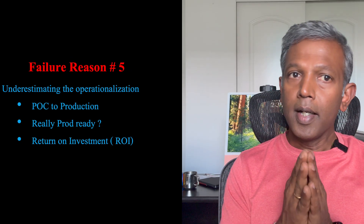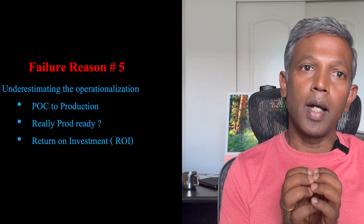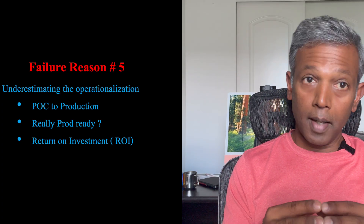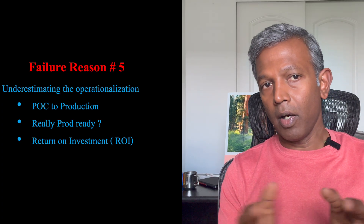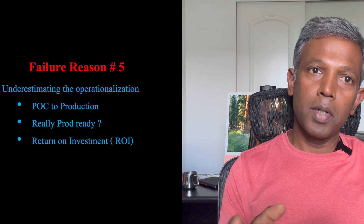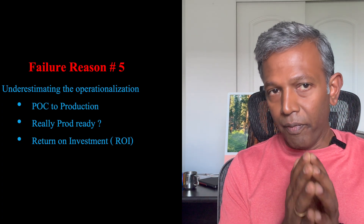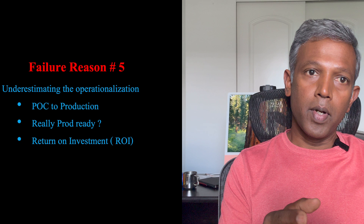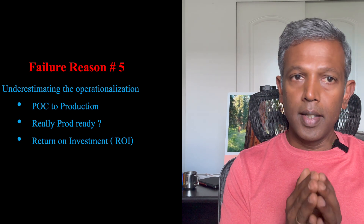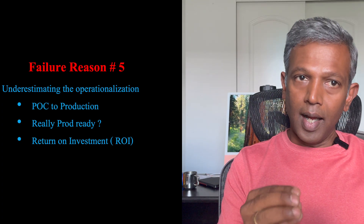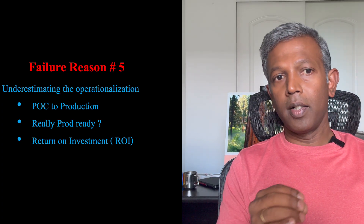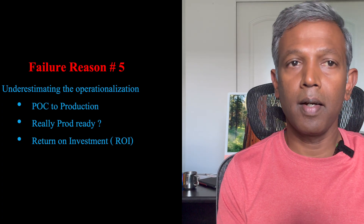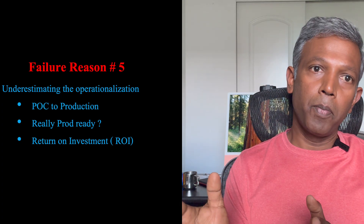The fifth reason MIT mentions is operationalization. When you build a POC or set up a generative AI or AI agent solution in a development environment, it all goes well. But when you plan to adopt it in production, you fail. First, define your strategies properly, then go slowly — start small, try it out in the lower environment, deploy it, and see the full value there. Analyze whether you want to implement this in production to get the full benefit, and align the solution with the business to get return on investment. Plan all of these well before moving to production.